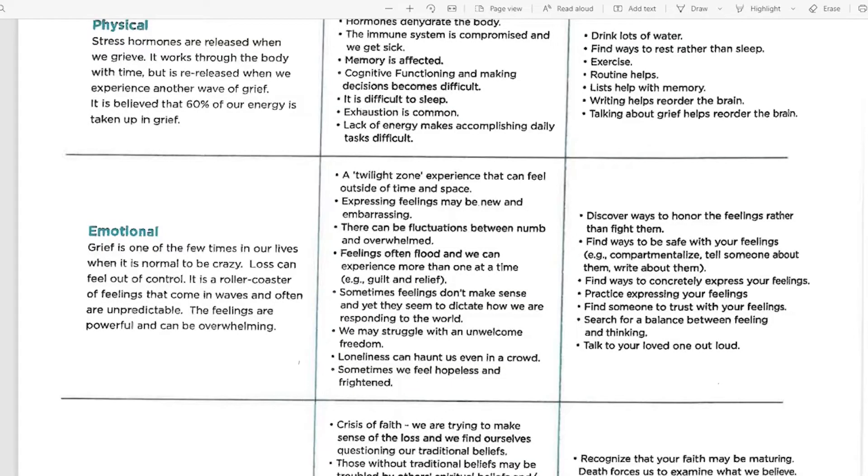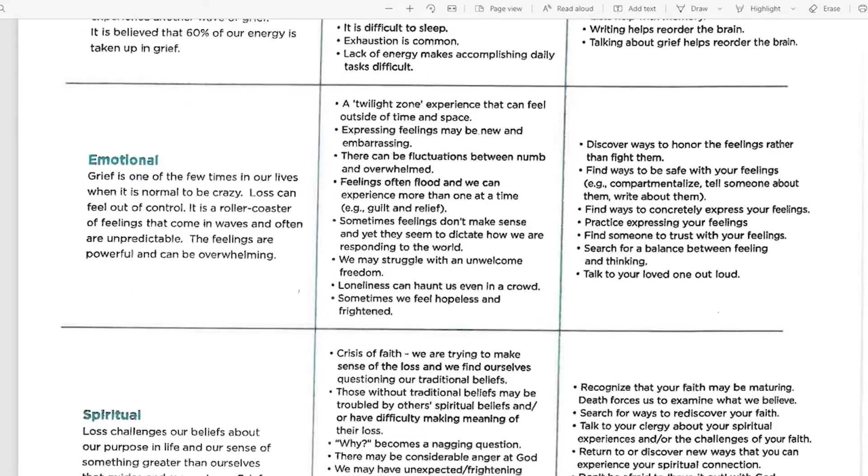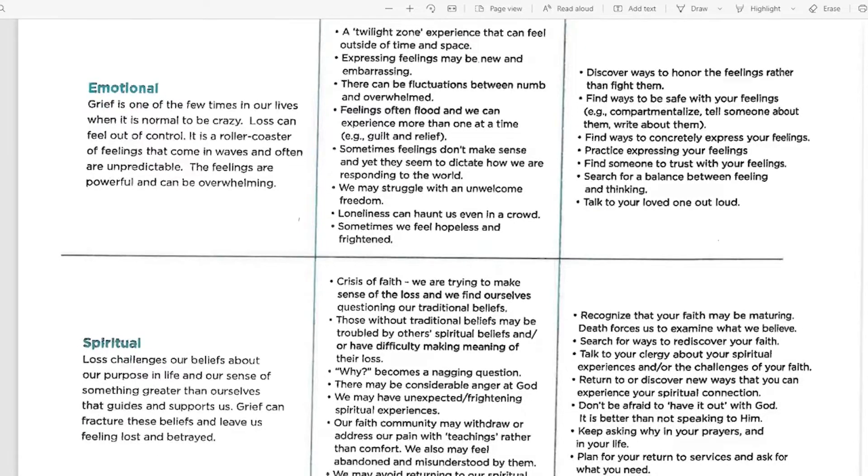Find ways to be safe with your feelings. Telling somebody about them. Compartmentalizing them. Writing about them. Find ways to concretely express your feelings. That may pull that exercise. That may pull that walking in nature. That may pull some self-care into it. Find someone to trust with your feelings. Search for a balance between feeling and thinking. And talk to your loved one that you've lost out loud. There's nothing wrong with that. There is a connection that we still have to our loved one. Even though the physical being is no longer here, we still have that connection. We can still continue to have that soul connection with them.